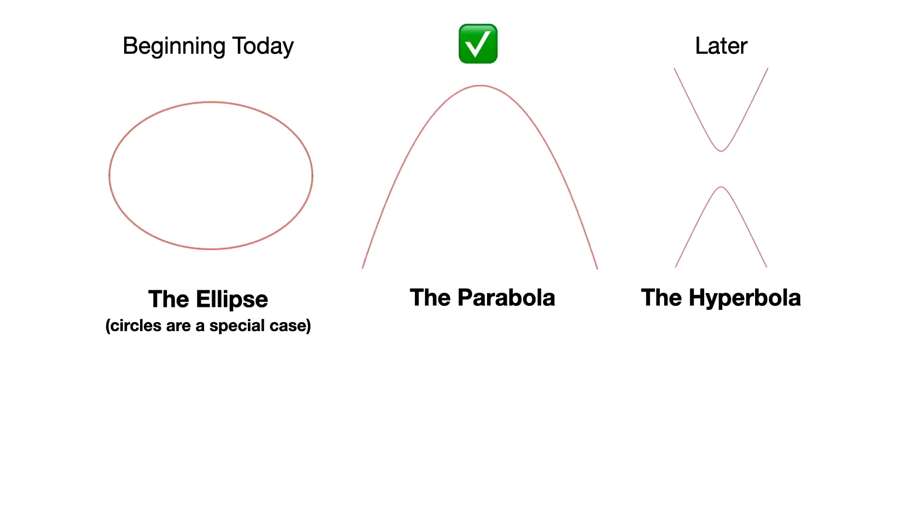We learned in our first lesson that there are three basic types of conic sections: the ellipse, the parabola, and the hyperbola. We have just completed a bunch of lessons discussing the parabola and now we're going to discuss the ellipse.